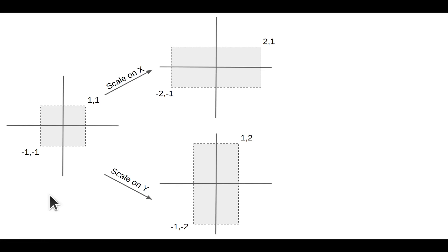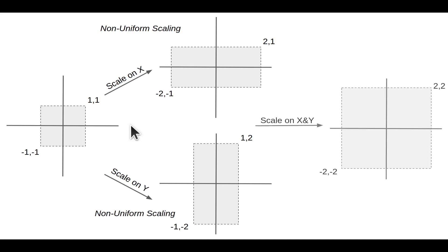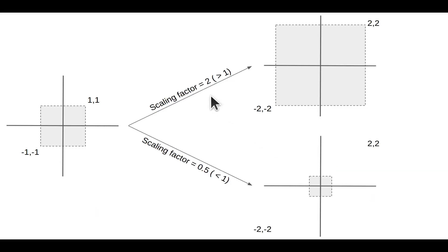If we scale the y component by 2, the rectangle is stretched vertically. When only one dimension is scaled, or when the scaling factor is different for each dimension, we call this non-uniform scaling — the original proportions of the object are lost. If we scale both x and y by 2, we get a larger square; this is called uniform scaling and preserves the proportions. If the scaling factor is greater than 1 the object becomes larger, if less than 1 but greater than 0 it becomes smaller, and if negative the object flips.